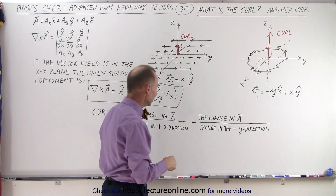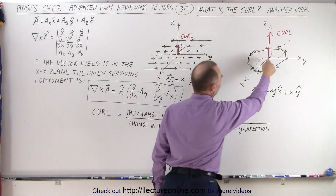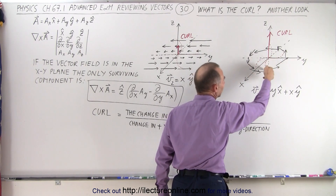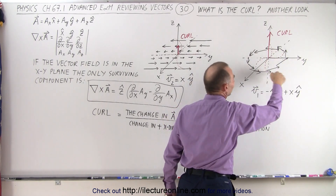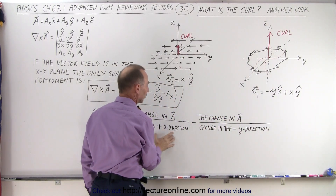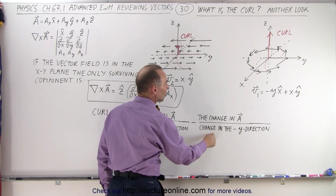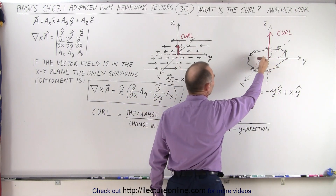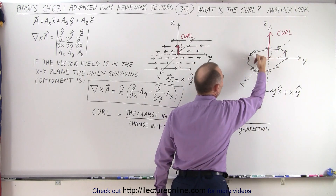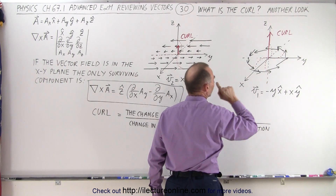Looking at the second vector field, we move in the positive x direction from the origin and notice a curling motion in the counterclockwise direction — so that causes a curl to exist, and that's the first term. Then we subtract the change when we move in the negative y direction, and again we see a curling motion, which causes a change to occur.